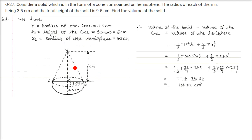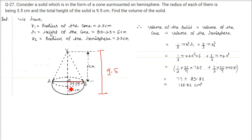Finally, a solid is in the form of a cone surmounted on a hemisphere. The radius of each is 3.5 cm and the total height of the solid is 9.5 cm. The hemisphere height equals its radius 3.5, so the cone height is 9.5 − 3.5 = 6 cm. We need to find the volume of this solid.